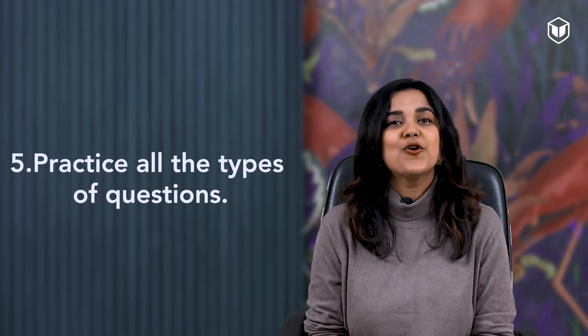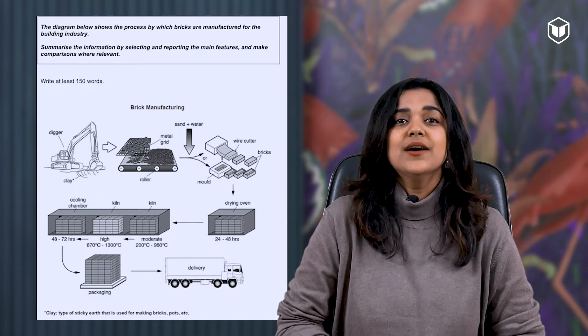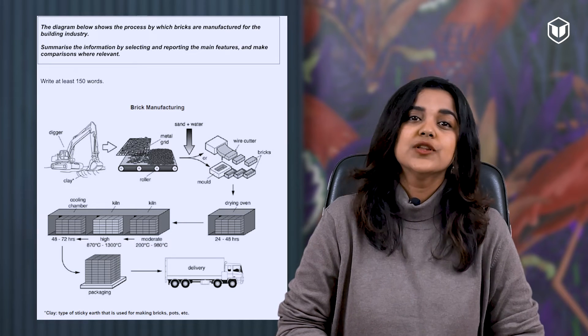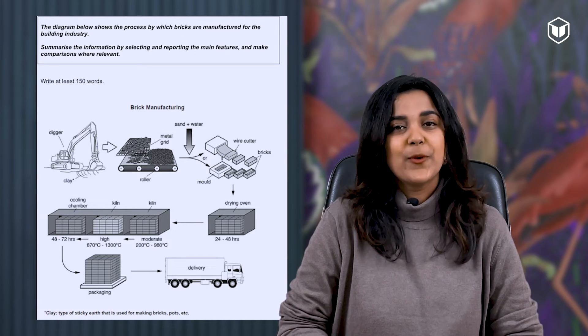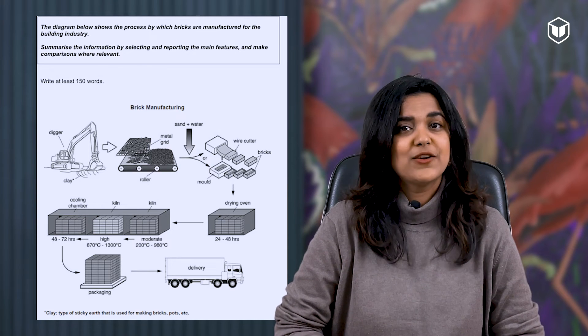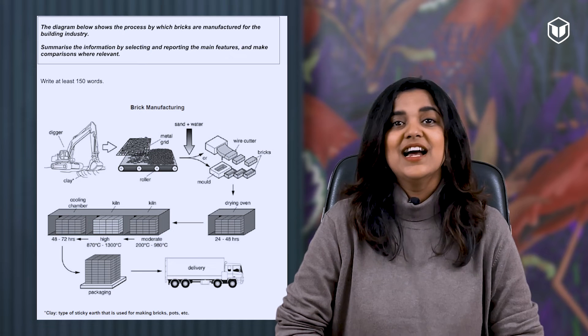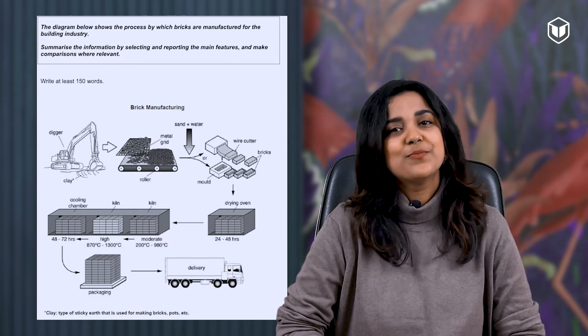Tip number five: practice all types of questions. There are a variety of questions you might encounter in this task, namely pie charts, tables, bar graphs, plans, and even diagrams. We just looked at a pie chart. Similarly you need to practice the other types. Here's what a diagram might look like: 'The diagram below shows the process by which bricks are manufactured for the building industry. Summarize the information by selecting and reporting the main features and make comparisons where relevant.' Just like the pie chart, you begin by understanding the diagram, give an overview without mentioning many details, then explain the process using good grammar and language devices. Here there are no dates so you will use present tense.